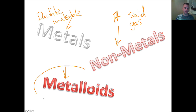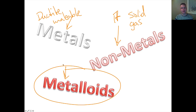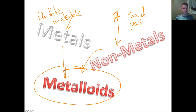As far as metalloids are concerned, these are elements that share properties — some properties that are similar to metals and some properties that are similar to non-metals.